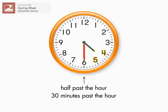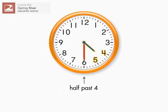Because the hour hand is halfway between 4 and 5, the time is half past 4, or 30 minutes past 4 o'clock.